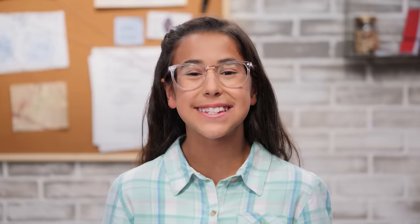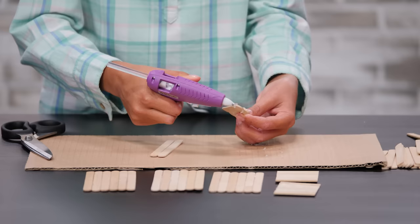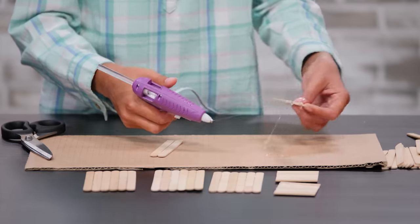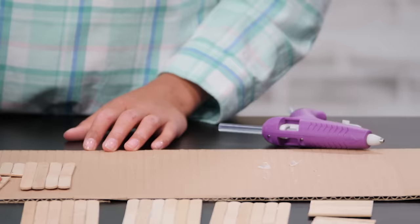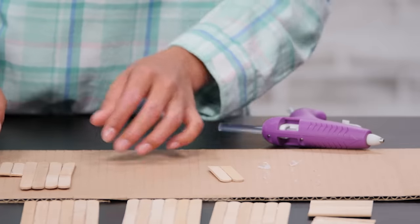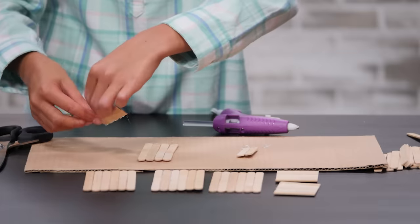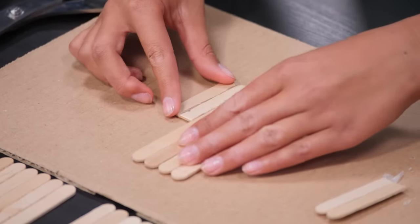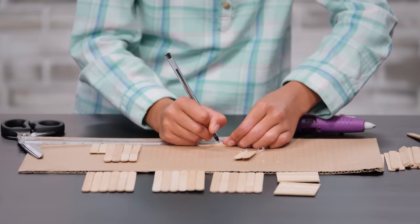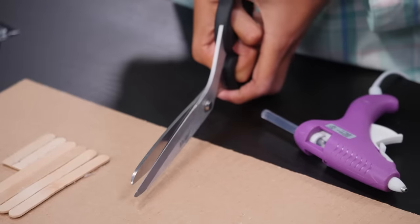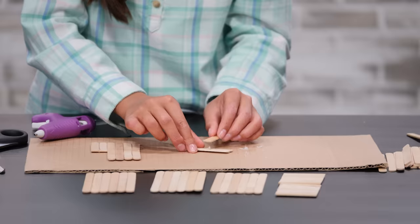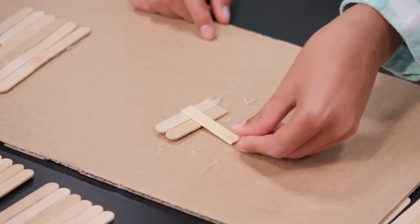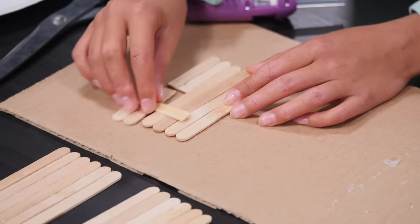Glue four more popsicle sticks together. Set that aside. Glue two more pieces together. Cut the two piece in half. Glue a two popsicle piece to a four popsicle piece. This creates the trick side. Cut two separate popsicle sticks two inches long. Cut the rounded end. Glue this stick to the two stick piece. It should look like a T-shape. The T-shape piece will fit into the trick side.